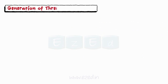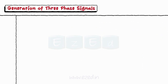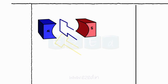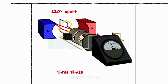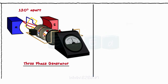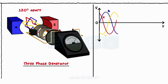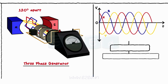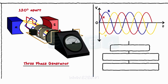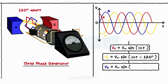So let's study the generation of the three-phase signals. In the three-phase generation, we connect three conductors 120 degrees apart from each other and the remaining structure remains the same as that of the single-phase generator. All three conductors rotate in an anti-clockwise direction with the same angular velocity omega, generating three sinusoidal signals having equal magnitudes but different phases. These three signals are represented mathematically as Vr = Vm·sin(ωt), Vy = Vm·sin(ωt − 120°), and Vb = Vm·sin(ωt − 240°).